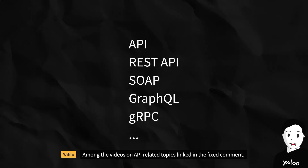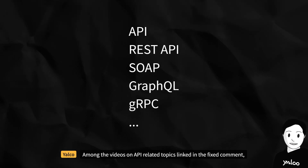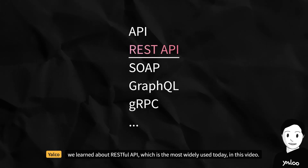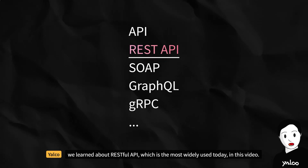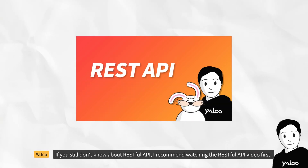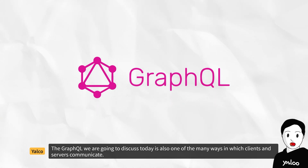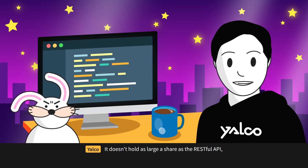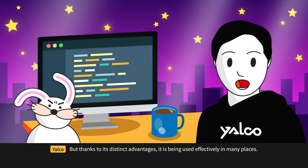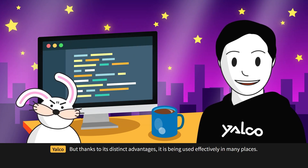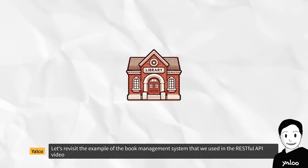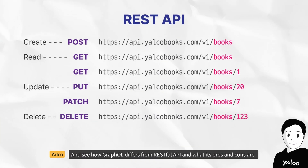Today's video topic is GraphQL. Among the videos on API-related topics, we previously learned about RESTful API, which is the most widely used today. If you still don't know about RESTful API, I recommend watching that video first. GraphQL is also one of the many ways clients and servers communicate. Let's revisit the book management system example to see how GraphQL differs from RESTful API and what its pros and cons are.